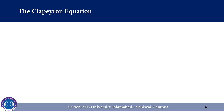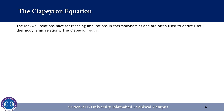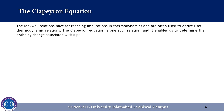After deriving the Maxwell relations, we will now see our next topic: the Clapeyron equation. The Maxwell relations have far-reaching implications in thermodynamics and are often used to derive useful thermodynamic relations. The Clapeyron equation is one such relation, and it enables us to determine the enthalpy change associated with a phase change, such as the enthalpy of vaporization, from a knowledge of pressure, specific volume, and temperature data alone. For this, consider the third Maxwell relation: partial p over partial T while v is held constant is equal to partial s over partial v while T is held constant.